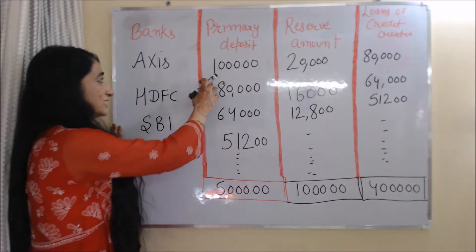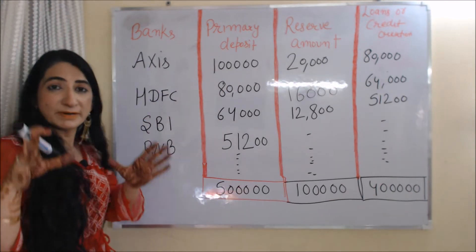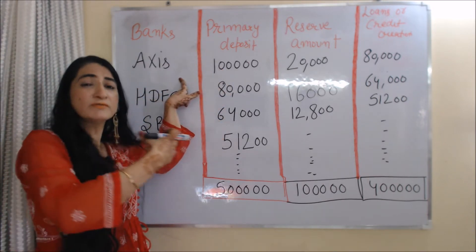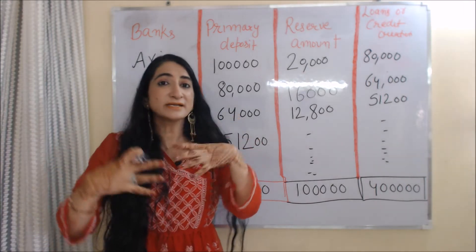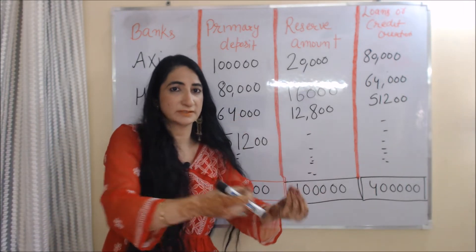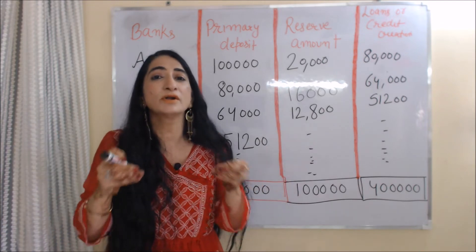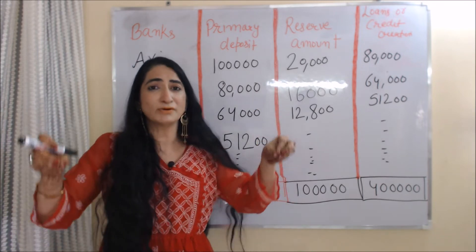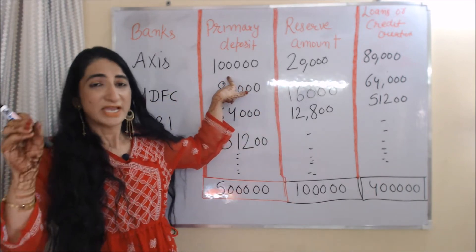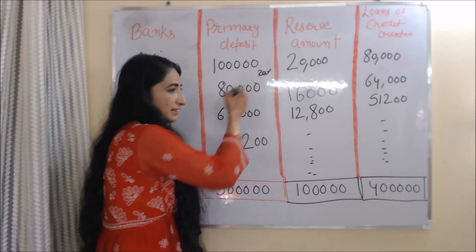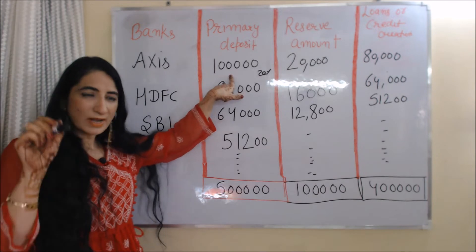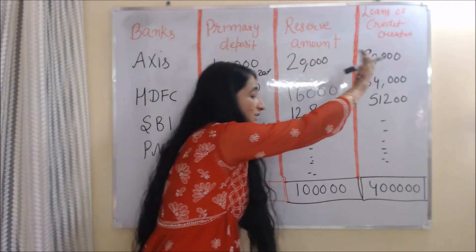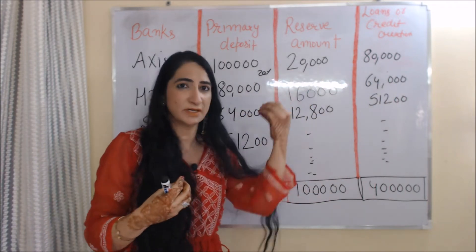Person A deposits 1 lakh rupees in Axis Bank. Axis Bank uses this 1 lakh rupees to give loans to other persons. But banks cannot use their whole amount for giving loans — they have to keep some amount as a reserve, called the required reserve ratio. Here we assume the required reserve ratio is 20%, so 20% of 1 lakh is 20,000. Axis Bank keeps 20,000 as a reserve and the remaining 80,000 is used for loans.